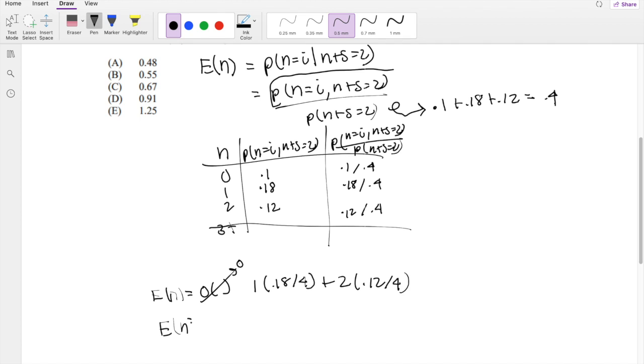And the second moment, n squared, is going to be 1 squared times 0.18 over 0.4, plus 2 squared times 0.12 over 0.4. So this is going to be, this one is equal to 1.65, and the first moment is equal to 1.05.